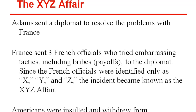When the diplomat got to France, three French officials met them there and tried very embarrassing tactics, including asking for bribes for the US representatives to meet with the French ambassador. Since the French officials were identified only as X, Y, and Z, the incident became known as the XYZ Affair.